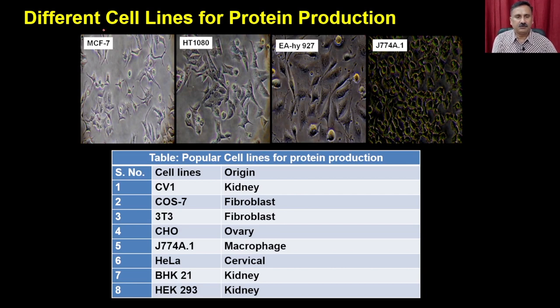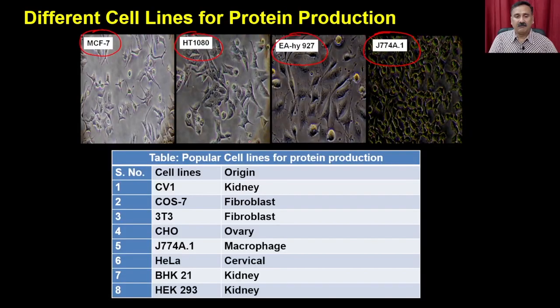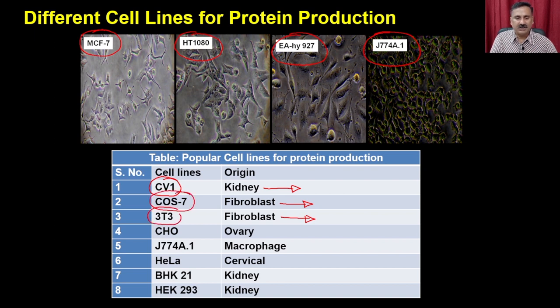Some of the cell lines you can use include MCF7, HT1080, EH927, and the macrophage cell line GA774. All of these cell lines have their own origins, so you can use the cells as per the origin of the protein. For example, if you are trying to express an enzyme mostly found in the kidney, you should use the CB1 cells. Similarly, you can use fibroblast cells like COS7 or NIH3T3 for protein or enzyme production.